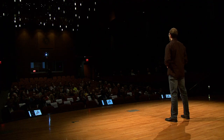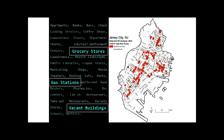Police use RTM to problem solve and develop risk reduction strategies tailored to their unique jurisdictions. As an example, at a task force meeting in Jersey City, a conversation quickly centered around gas stations, which were identified as one of the highest risk factors for violent crime according to the risk terrain model. Police officers in the room quickly explained how this made sense to them and how they had believed gas stations to be problematic for quite some time. RTM validated and confirmed their experienced gut feelings.